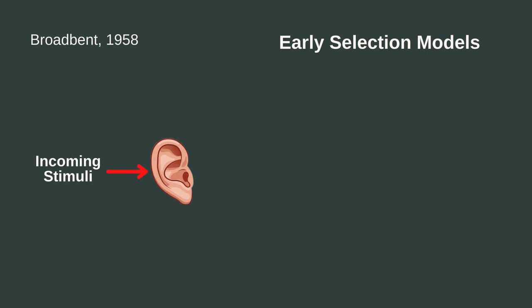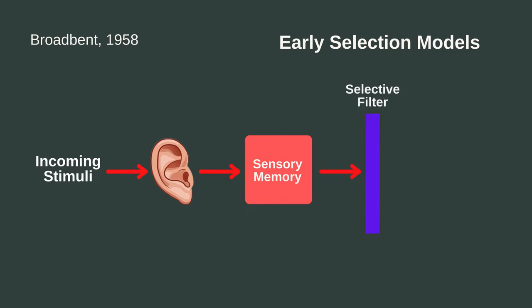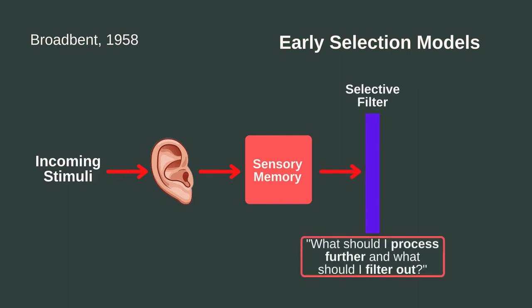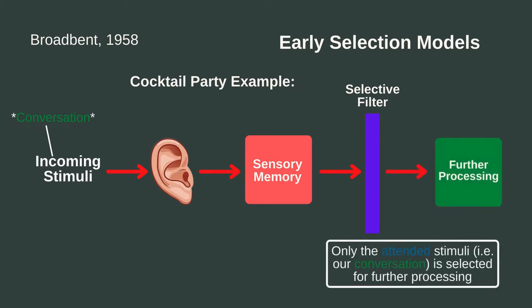These physical properties are very briefly stored in our sensory memory, which is a form of short-term memory that is specific to each sensory system. Subsequently, a selective filter is used to select what stimuli is to be processed further and what is to be filtered out. The decision as to what stimuli will be processed further is determined based on our goals. In our cocktail party example, our goal is to pay attention to our conversation. According to Broadbent's model, our goal of engaging in our conversation will lead our selective filter to select only the conversation we're paying attention to be further processed so that we can understand what is being said.